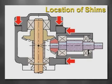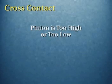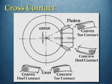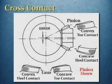In this illustration, we can see the location of the shims which are used to alter the mounting distance. The condition of cross contact occurs when the pinion is either too high or too low in relation to the gear. Here we see the contact patterns when the pinion is too high. Corresponding contact errors are also found on the pinion. To correct this, the pinion would need to be moved down.